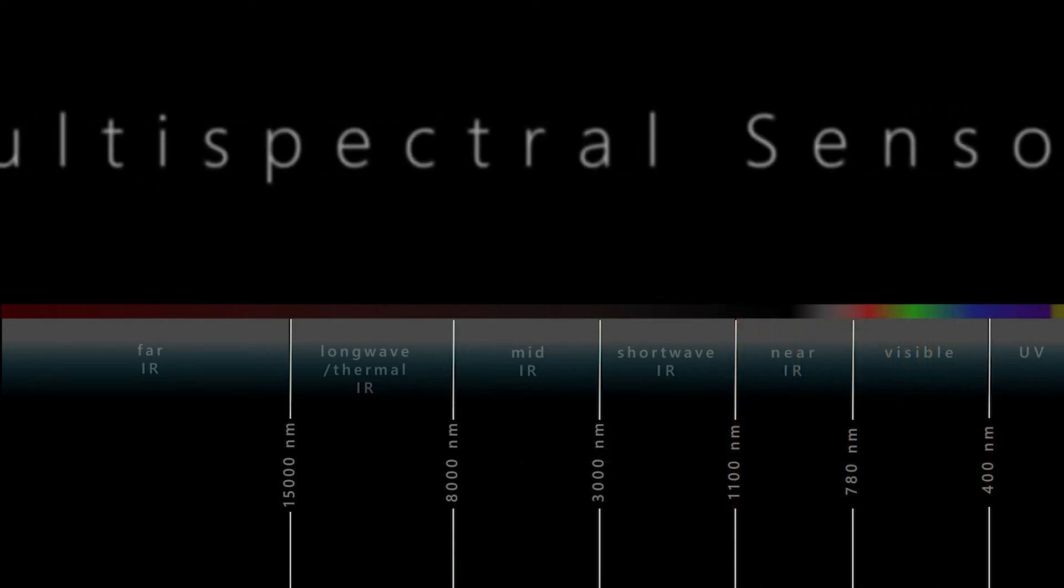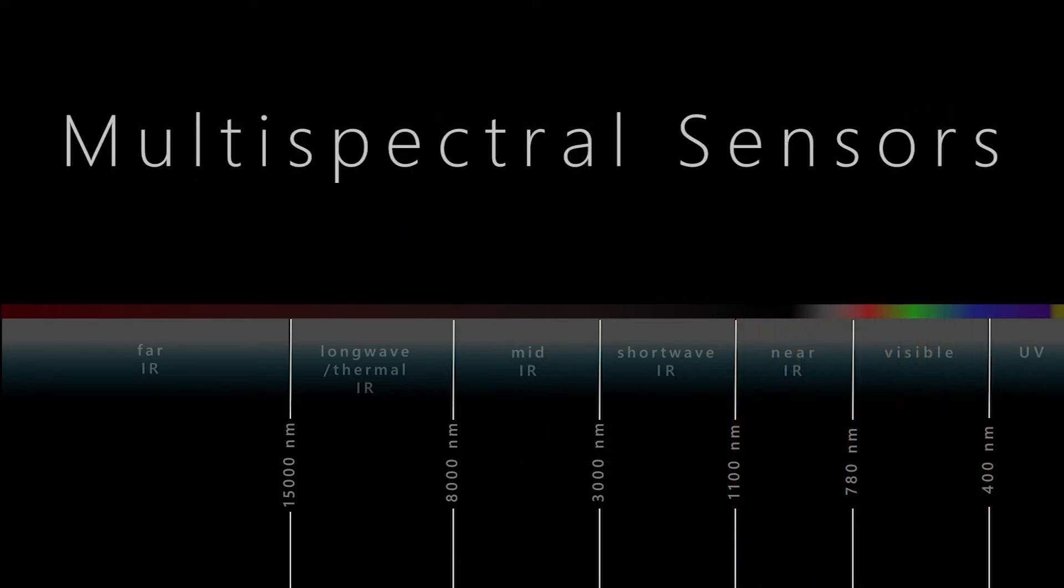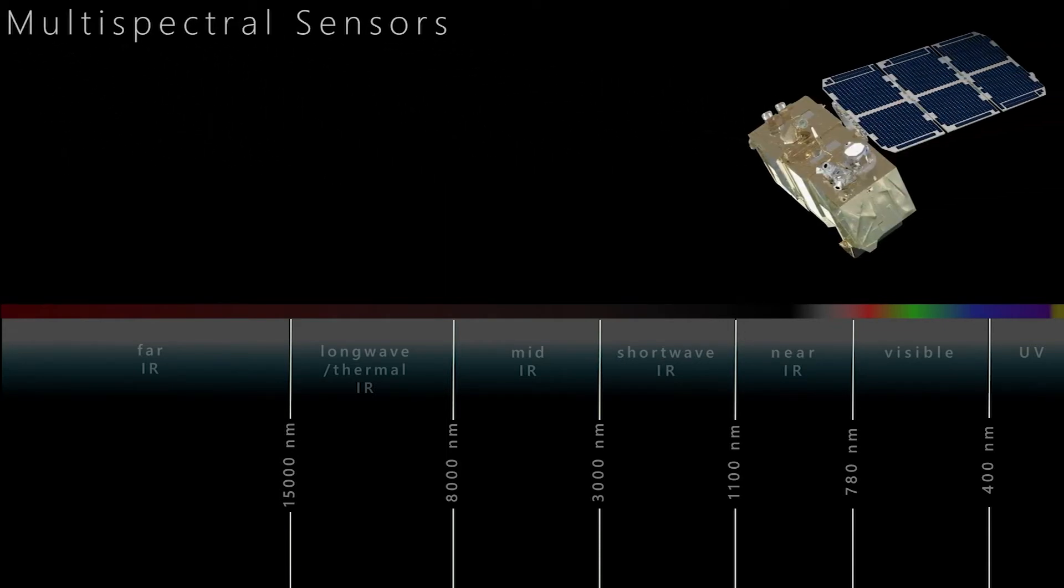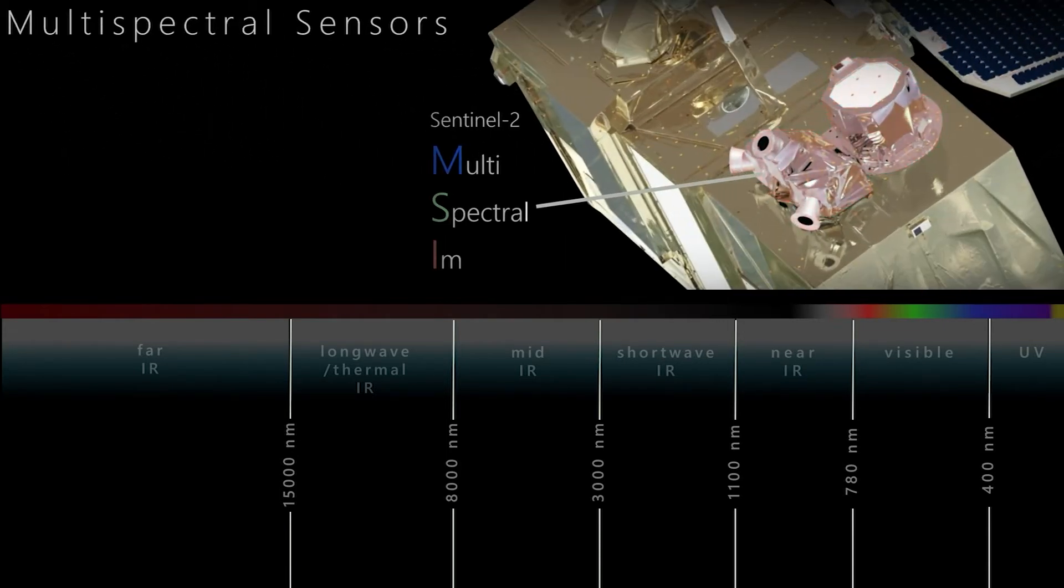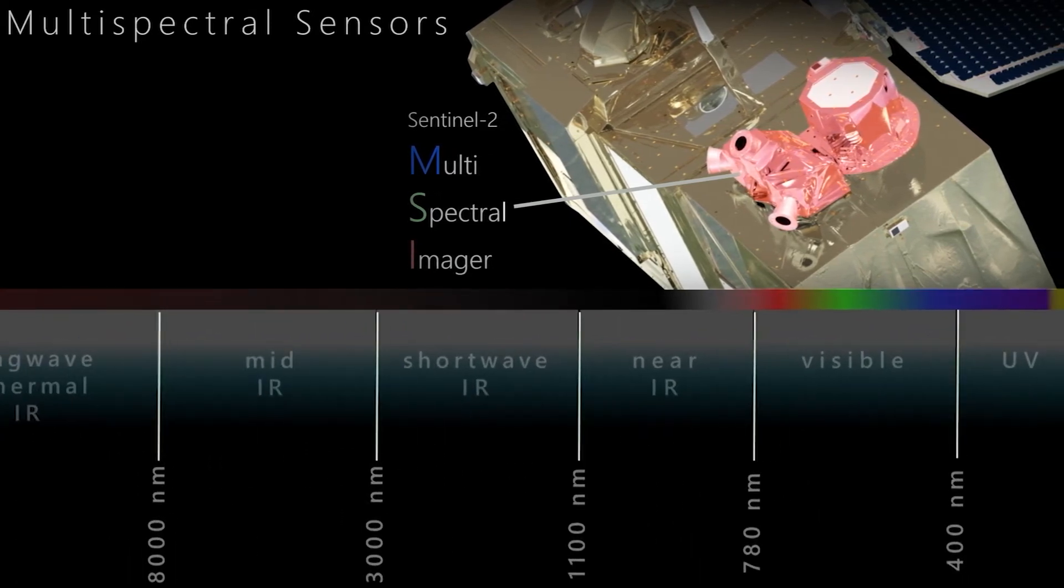Most Earth observation satellites are equipped with multispectral sensors. Modern multispectral sensors, such as the MSI on board Sentinel-2, collect information in many channels, in this case 12.